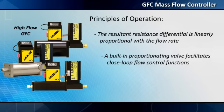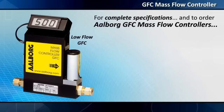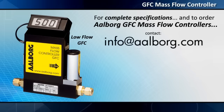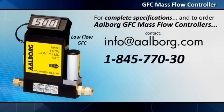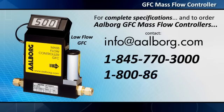A built-in proportionating valve facilitates closed-loop flow control functions. For complete specifications and to order Alborg GFC mass flow controllers, contact info@alborg.com or call 1-845-770-3000 or 1-800-866-3837 toll-free in the US and Canada.